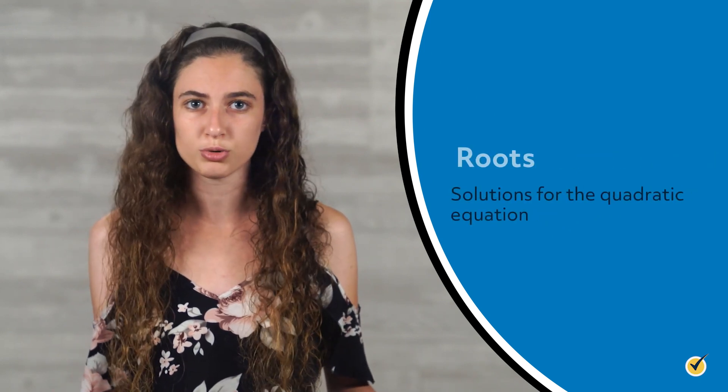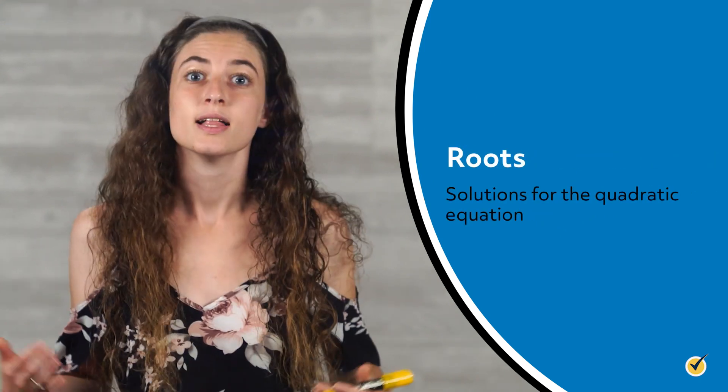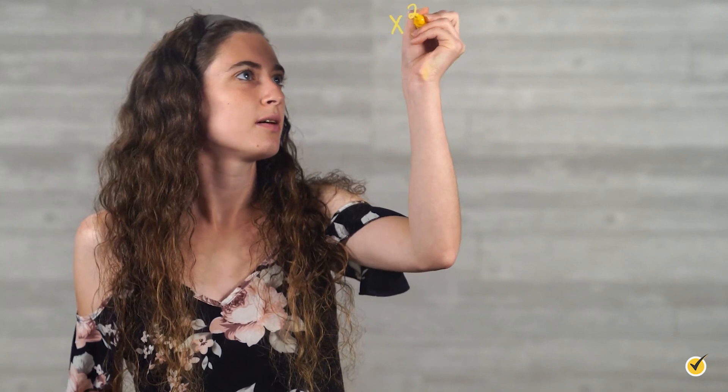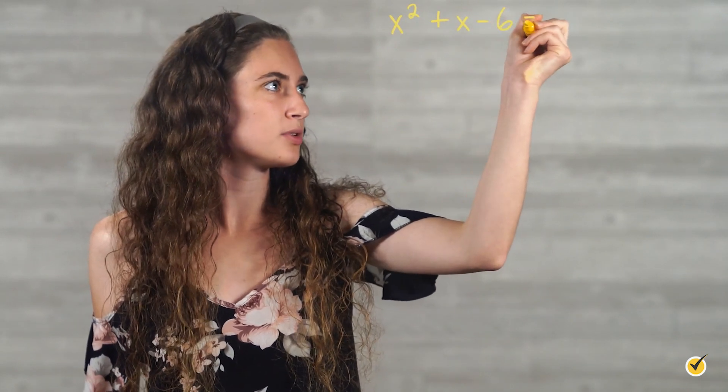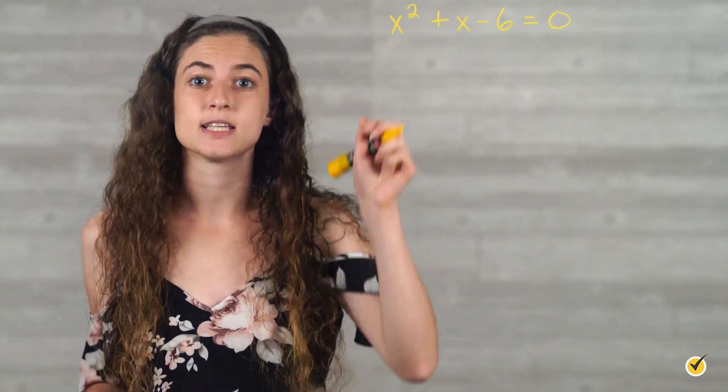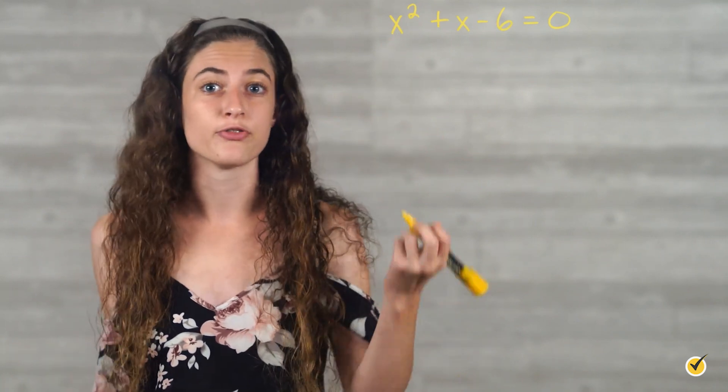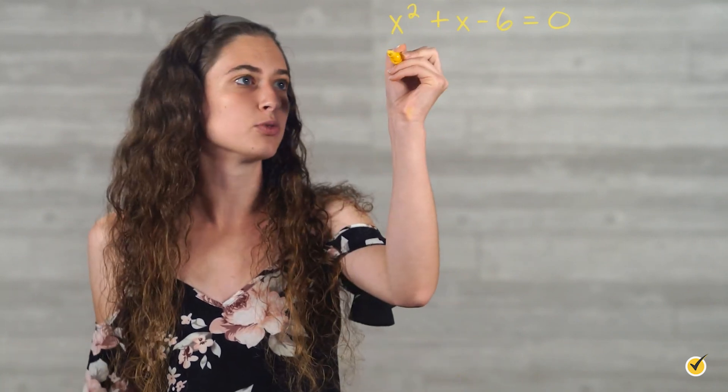These solutions are also called roots. Let's consider the quadratic equation x squared plus x minus 6 equals 0, and use the quadratic formula to find solutions for x. First, identify the values for the variables a, b, and c in the quadratic equation. Since the first term, x squared, is the same as 1x squared, the value for a is equal to 1.